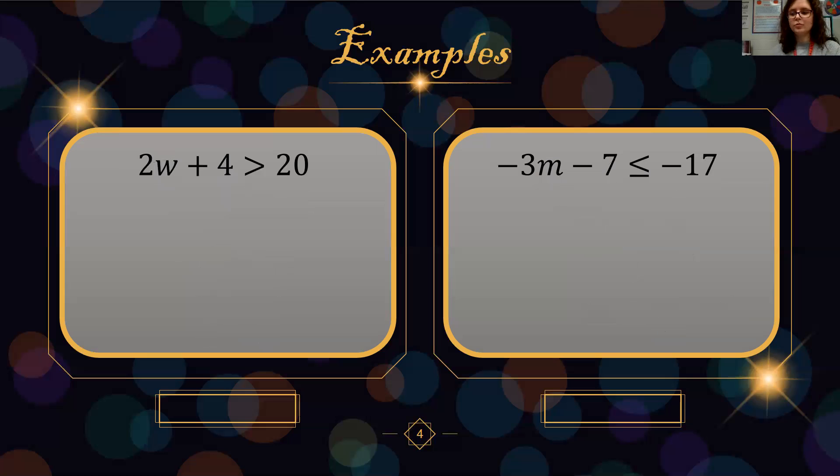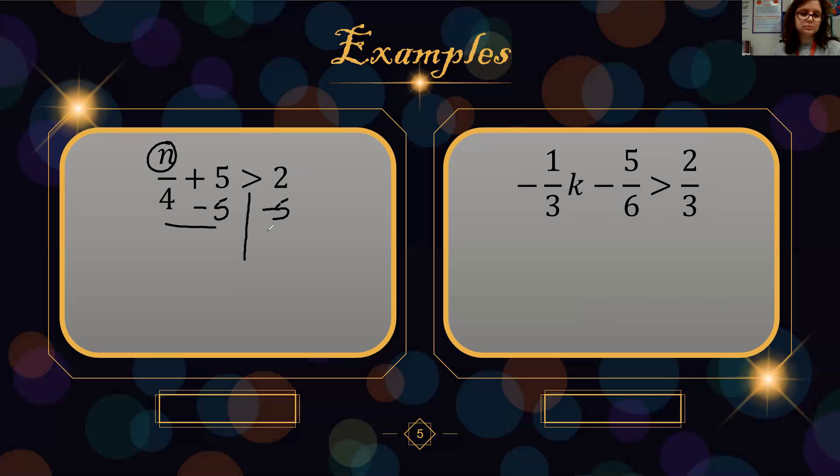Let's continue on with more examples. In this one, I have n over 4 plus 5 is greater than 2. I'm going to undo my addition with subtraction. So n over 4. Different signs, because this is a positive 2, tell me to subtract. I have more negatives, so this is a negative 3.